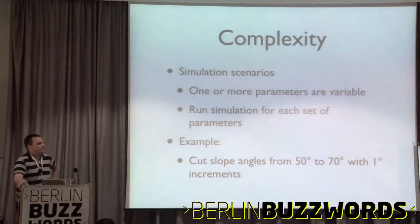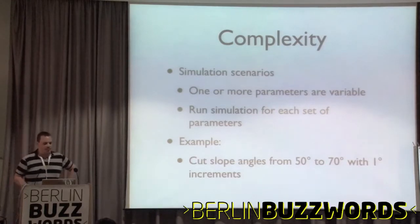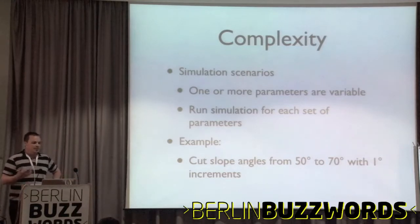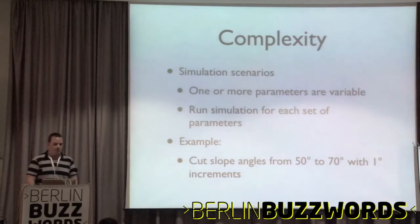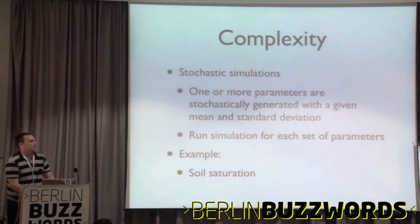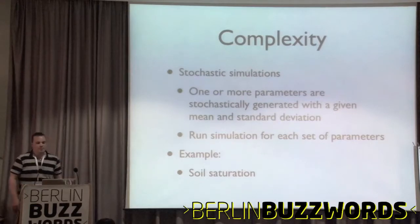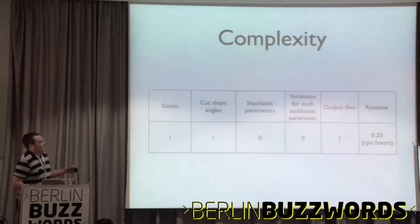When people are making decisions, they don't just want to evaluate one scenario. You might want to look at 20 different slope angles and work out how much to cut it back to reduce the risk. Another source of complexity is stochastic simulation — things that are quite hard to measure, like soil saturation, get defined as a mean and a standard deviation, and then the simulation gets run repeatedly with that parameter generated stochastically. So you go from one slope, one parameter, no stochastic parameters giving one file taking a core hour to run...